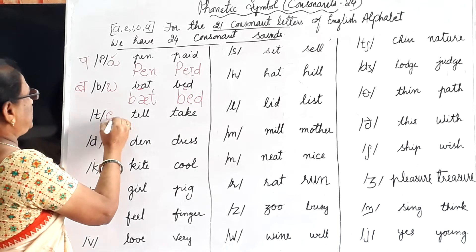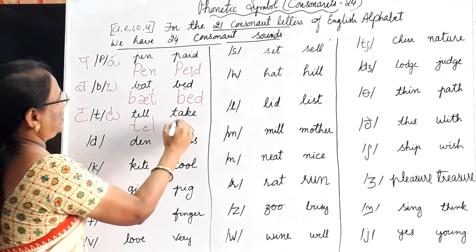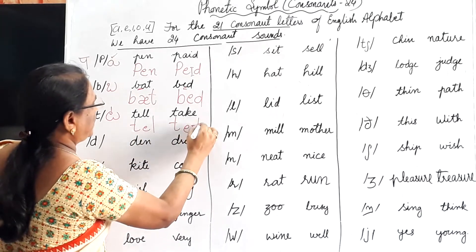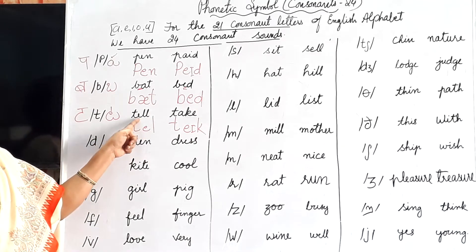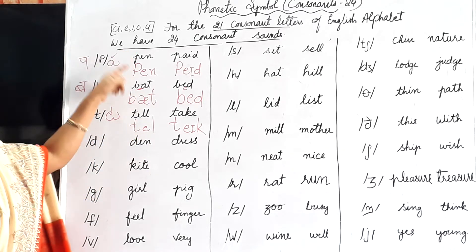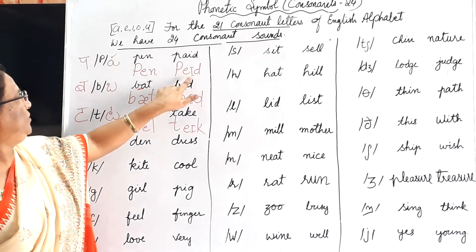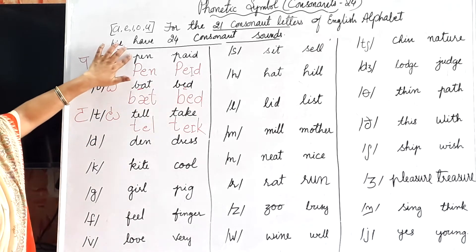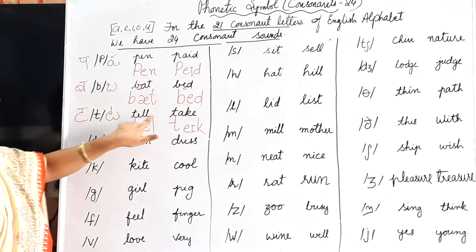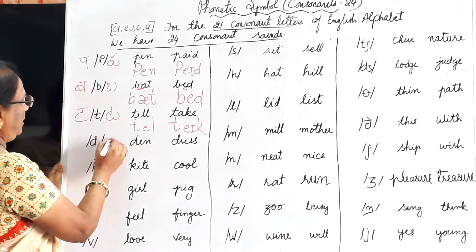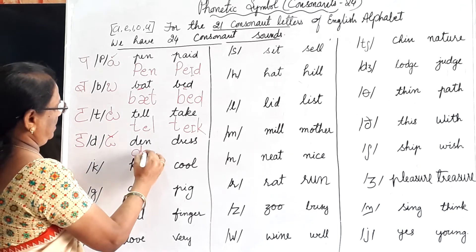T gives the /t/ sound. Tell, take. After a consonant letter, the sound depends upon the vowel letter. For example, P followed by E gives one sound; P followed by A gives another. So after the consonant, the sound depends on which vowel letter appears.